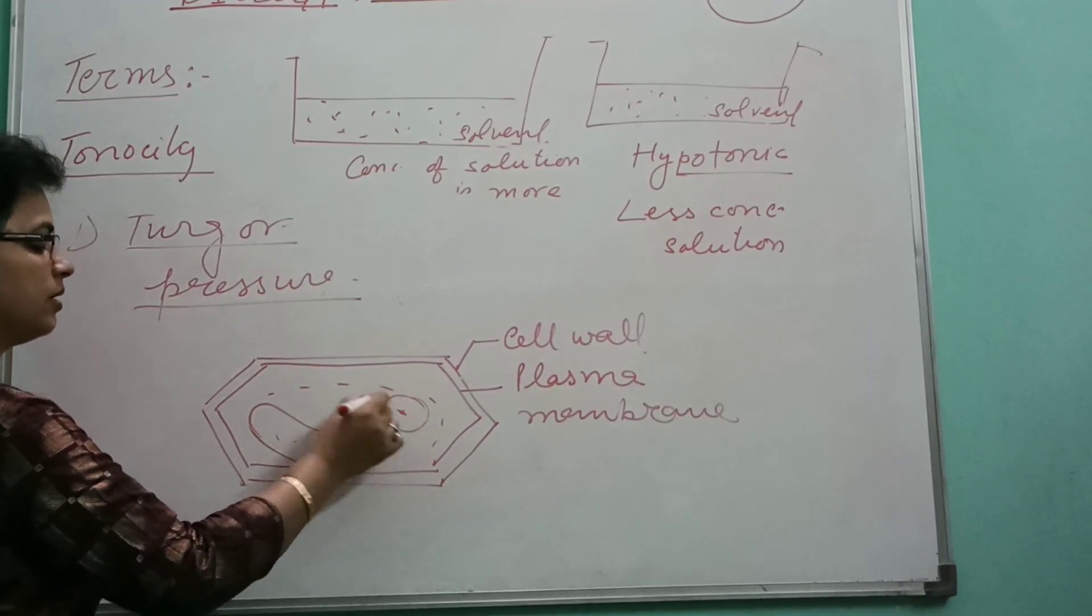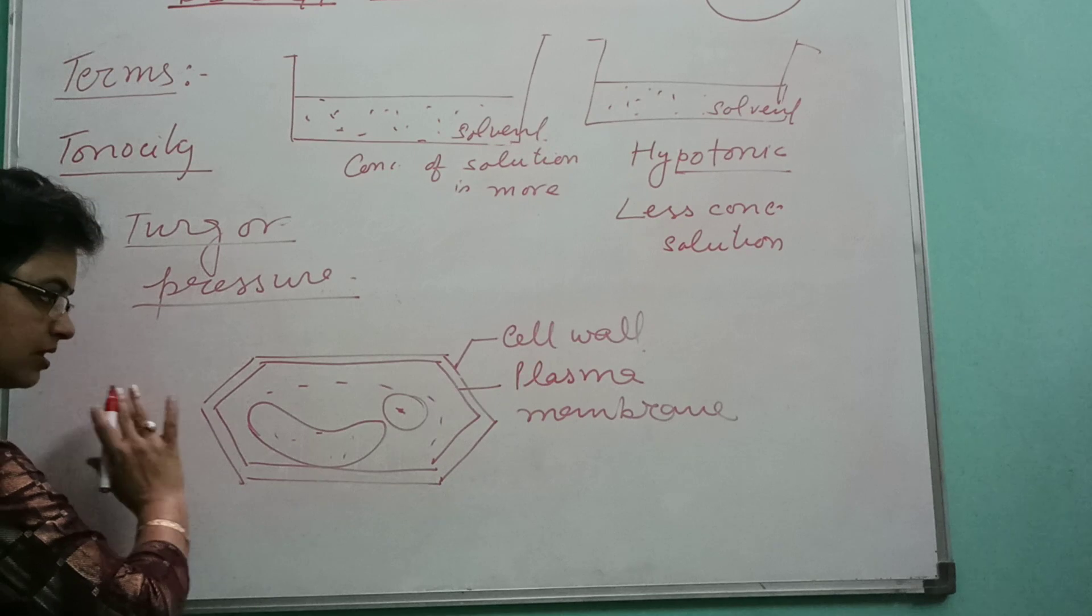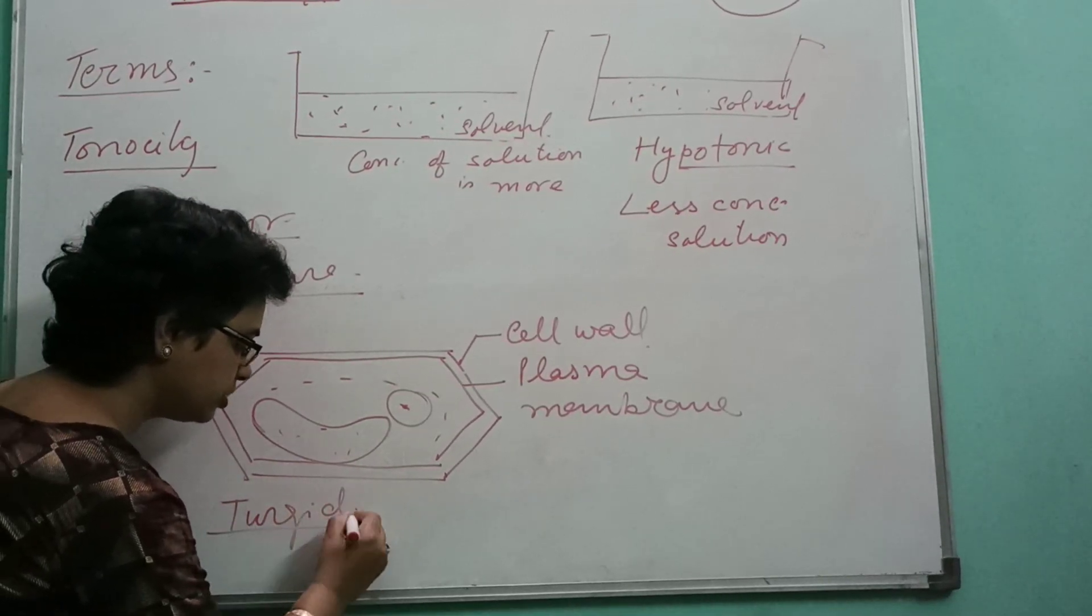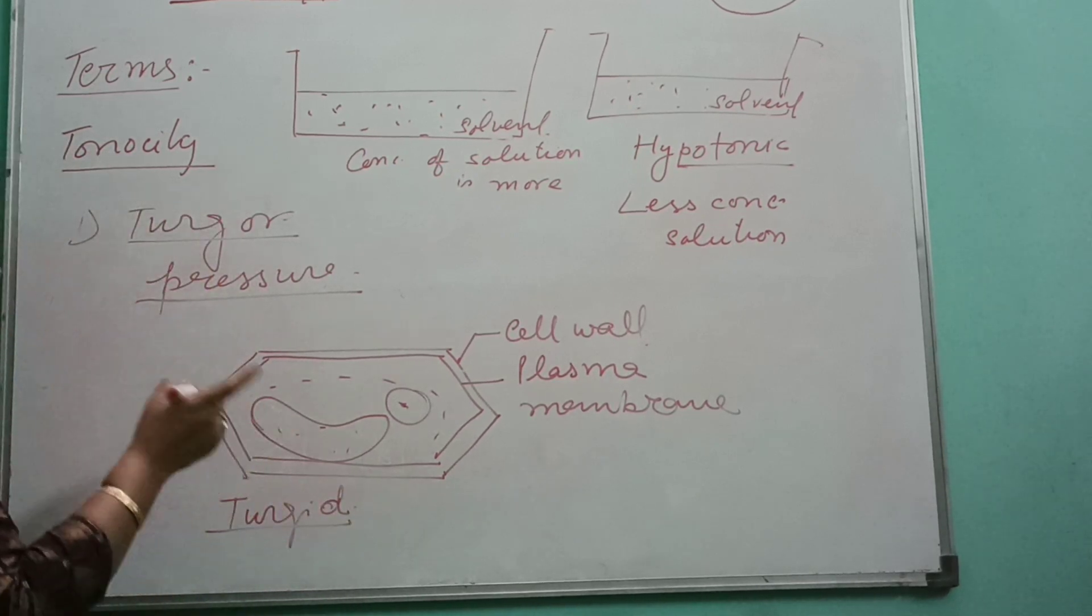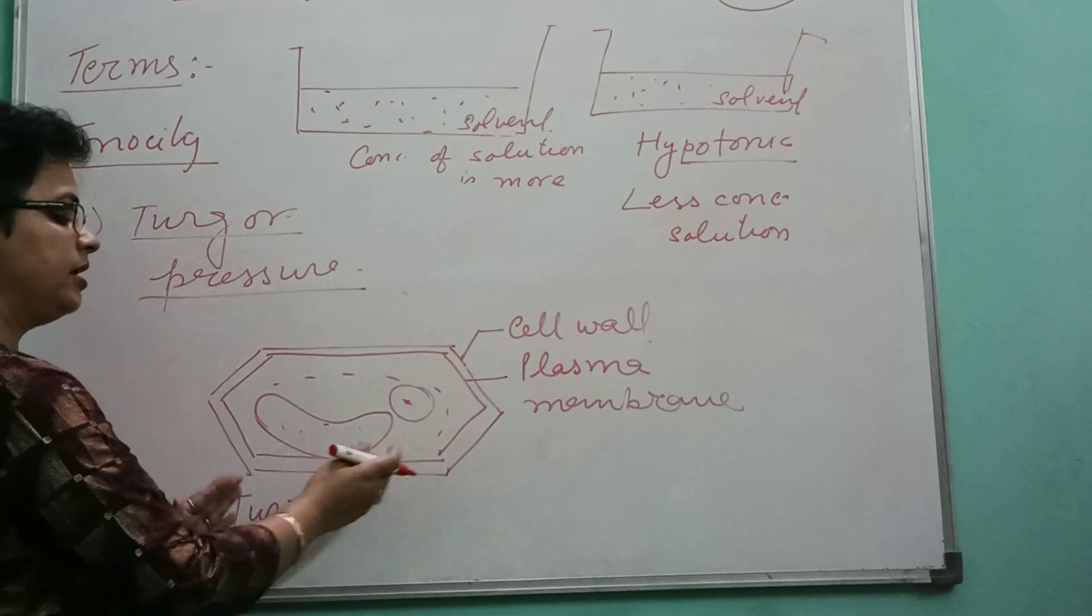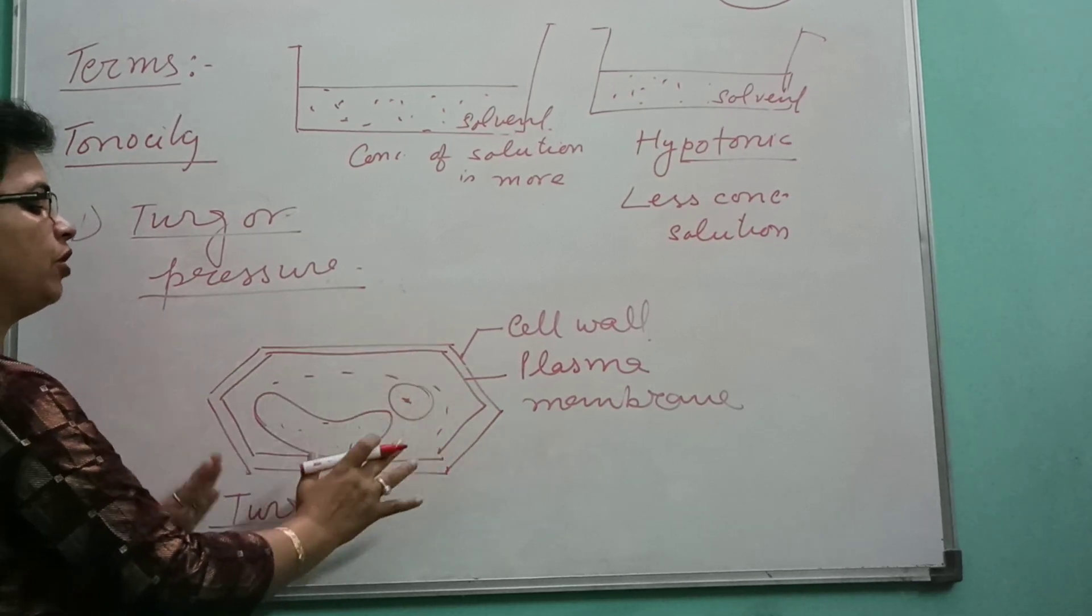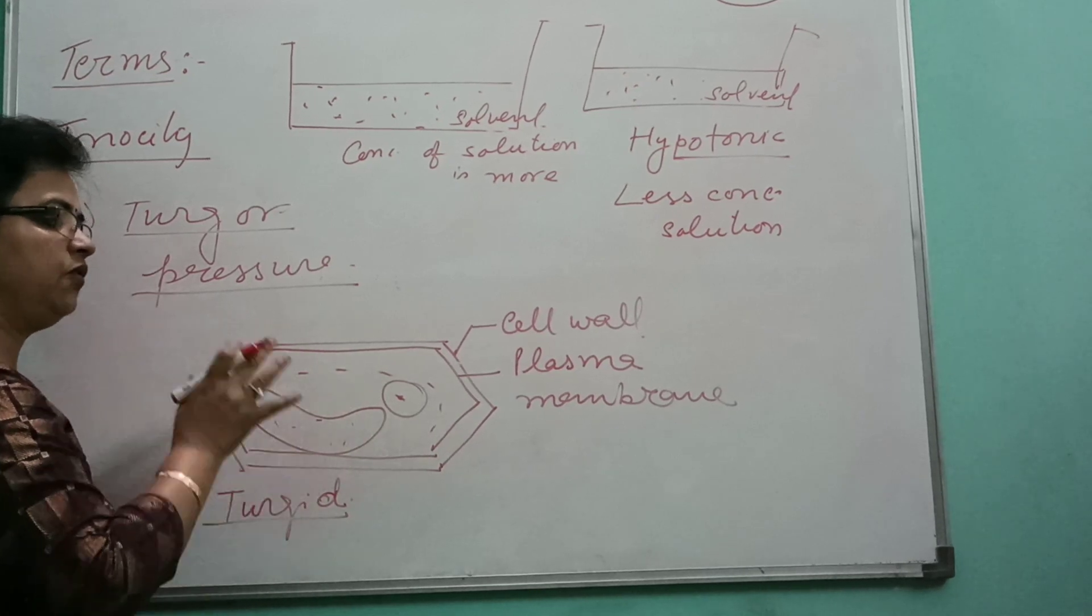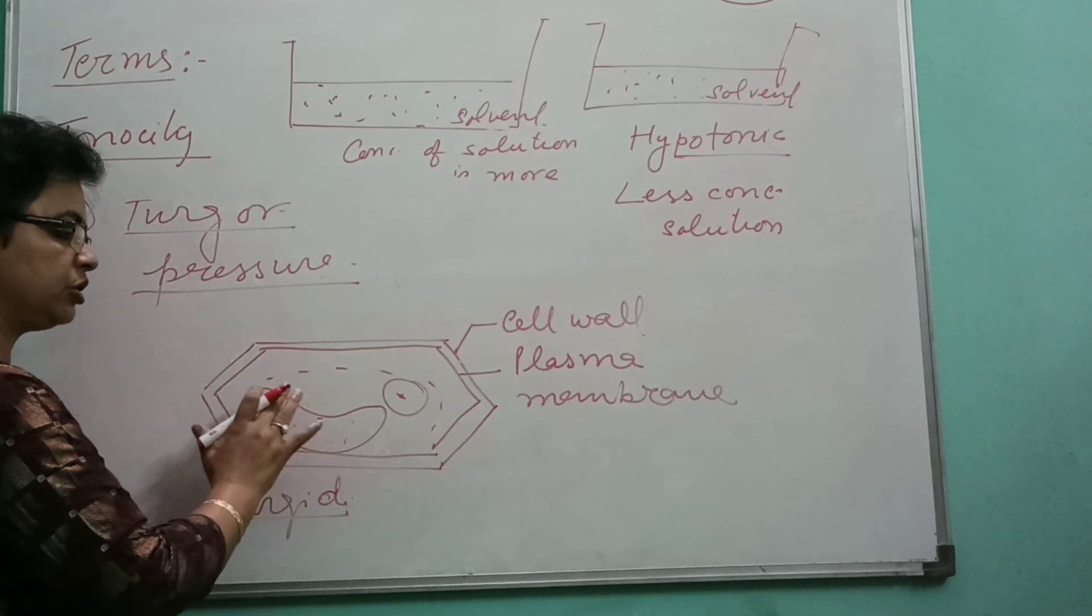Now, this cell is fully turgid, T-U-R-G-I-D. When the cell is there in its maximum volume and fully turgid, the vacuole is completely filled with water. In this condition, the whole cell content creates pressure on the wall.